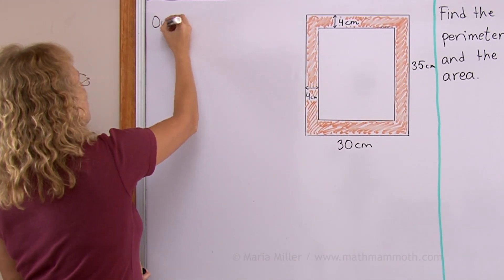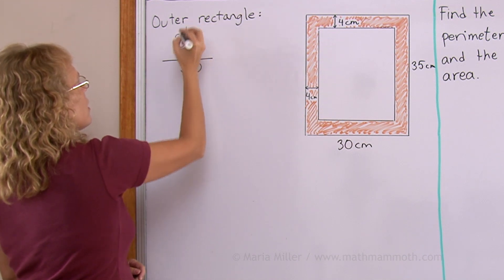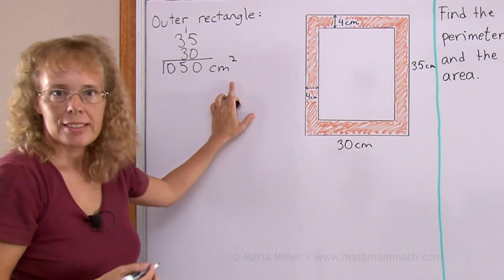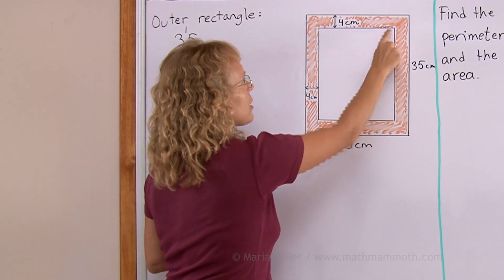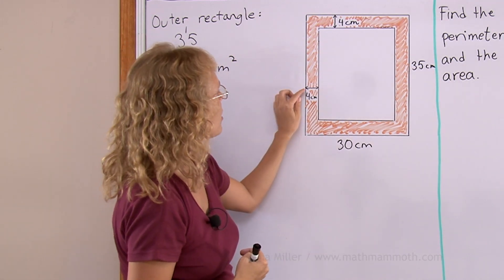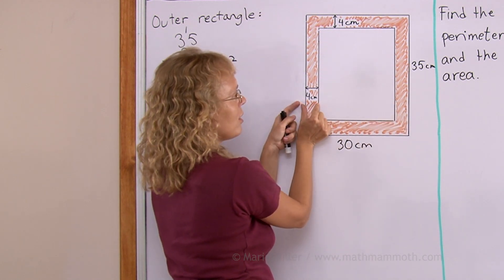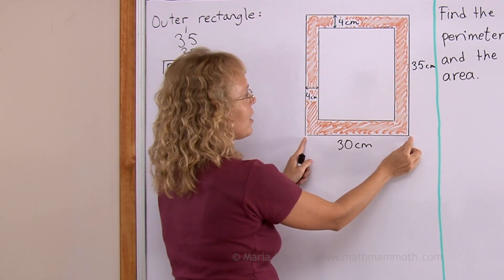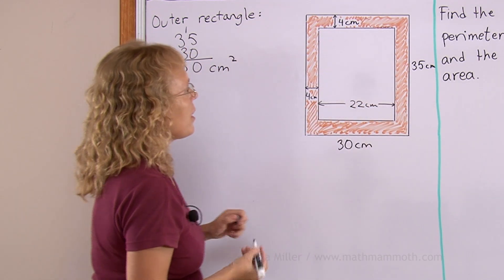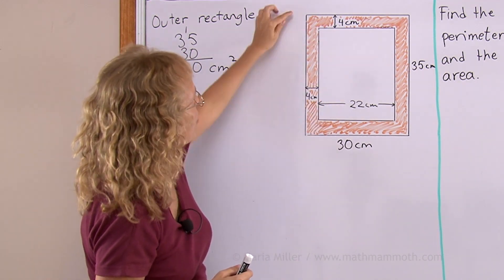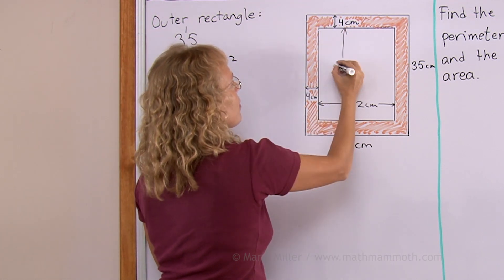I find the area of the outer rectangle, which is 30 times 35, that is 1050. Then I need the area of the inner rectangle, but we don't have the side lengths for that. We can calculate them because the frame is 4 centimeters on each side. This whole thing is 30, and then I take away 4 and 4, giving me 22. In a similar manner, this distance would be 35 take away 4 take away 4, so 35 minus 8 is 27 centimeters.